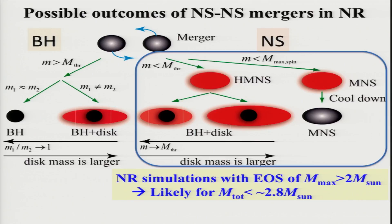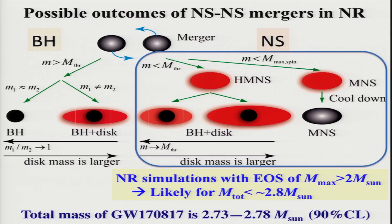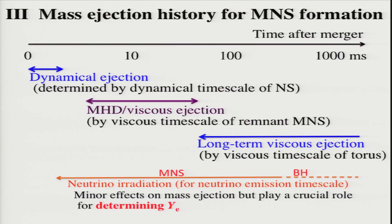As I said in the introduction, the mass of GW170817 is between 2.73 to 2.78 solar mass with 90% confidence. This means that in this merger event, the massive neutron star scenario is likely. We should consider the scenario based on the assumption that after the merger, a massive neutron star is formed. This shows the predicted mass ejection history. Soon after the merger, very violent shocks appear because each neutron star has a very fast motion, causing strong shocks, and matter of the binary neutron star is ejected dynamically — we call this dynamical ejection.